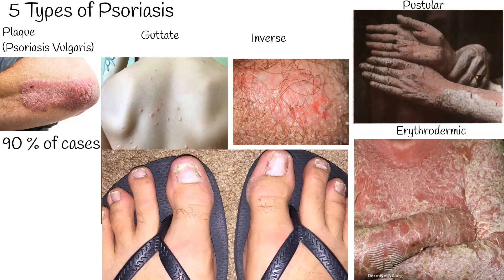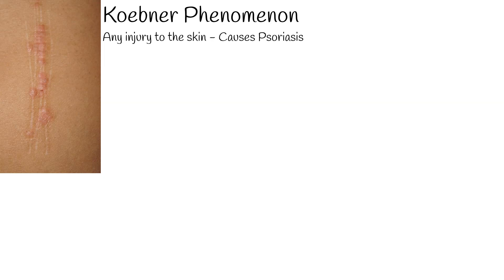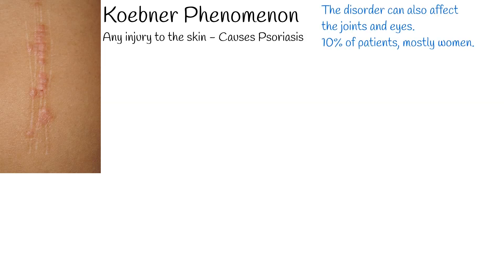Fingernails and toenails are affected in most people with psoriasis at some point in time. Any injury to the skin in patients with psoriasis induces lesions of psoriasis at that site, which is called the Koebner phenomenon. The disorder can also affect the joints and eyes; the eye is involved in about 10% of patients, mostly women.